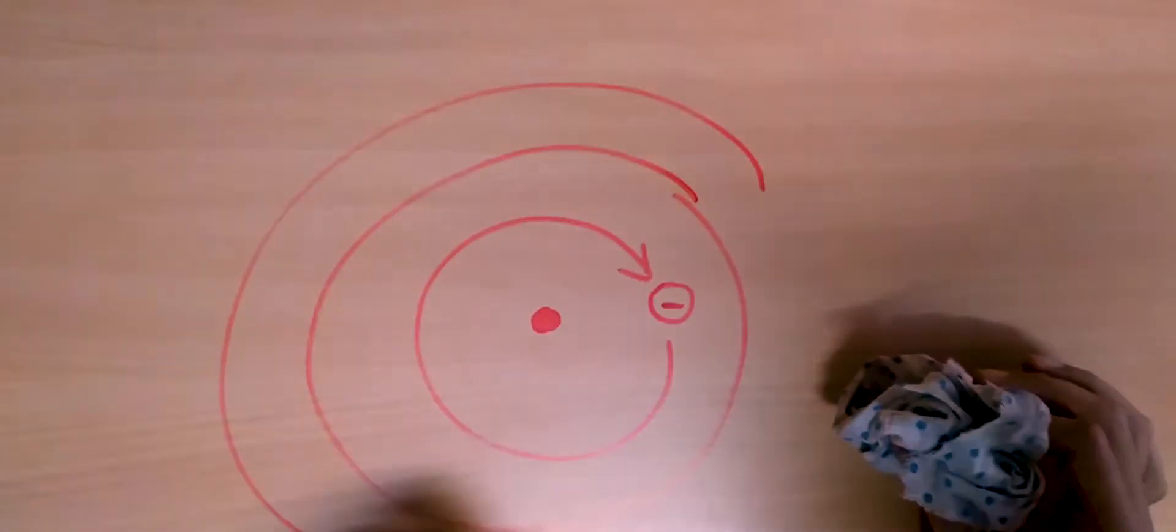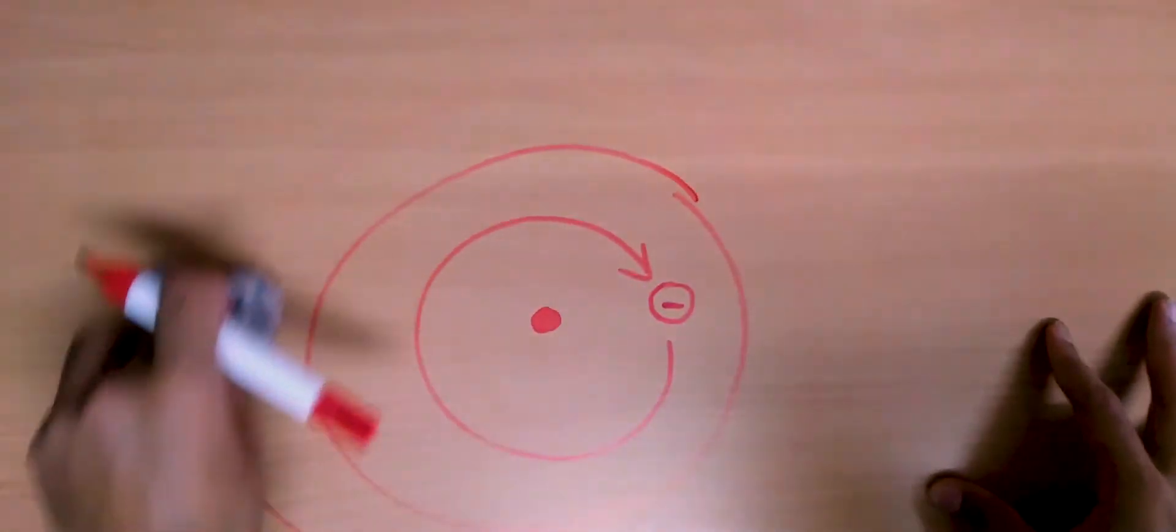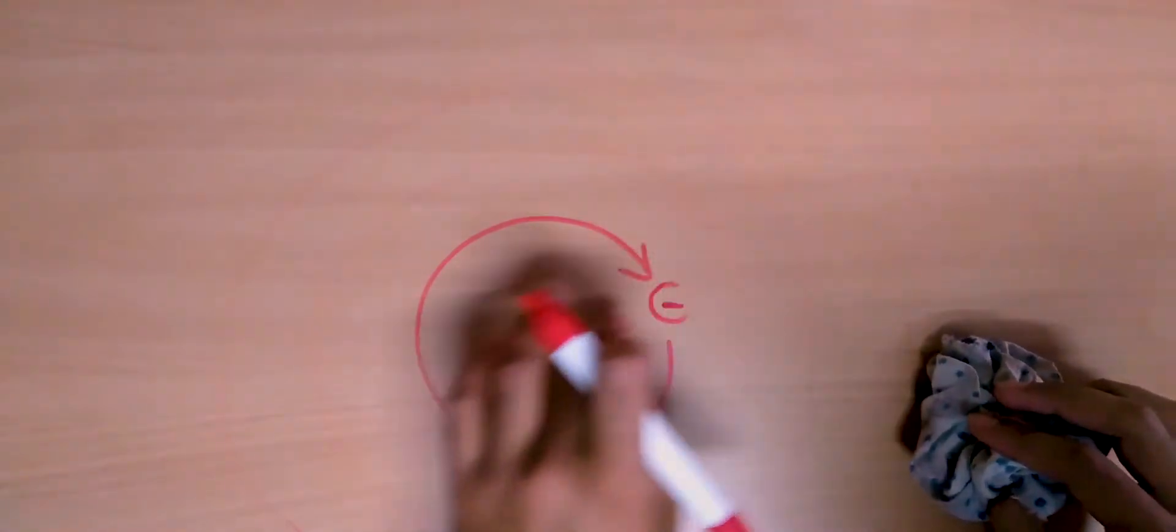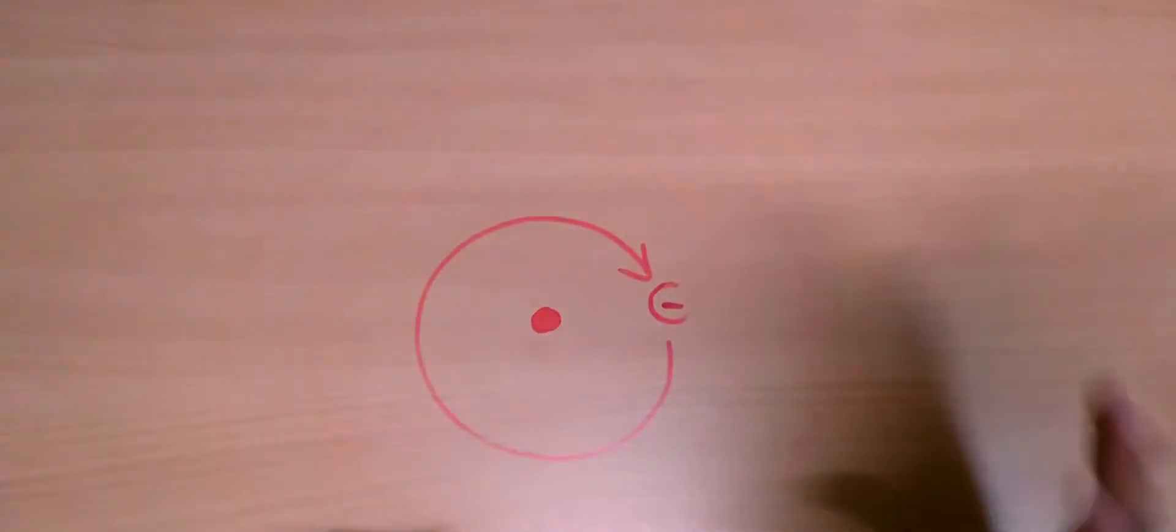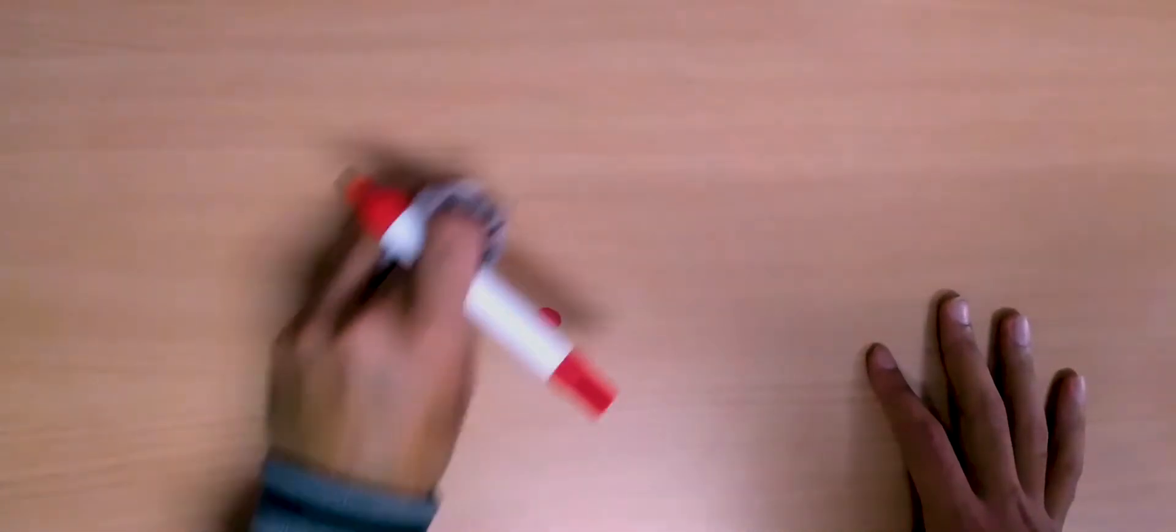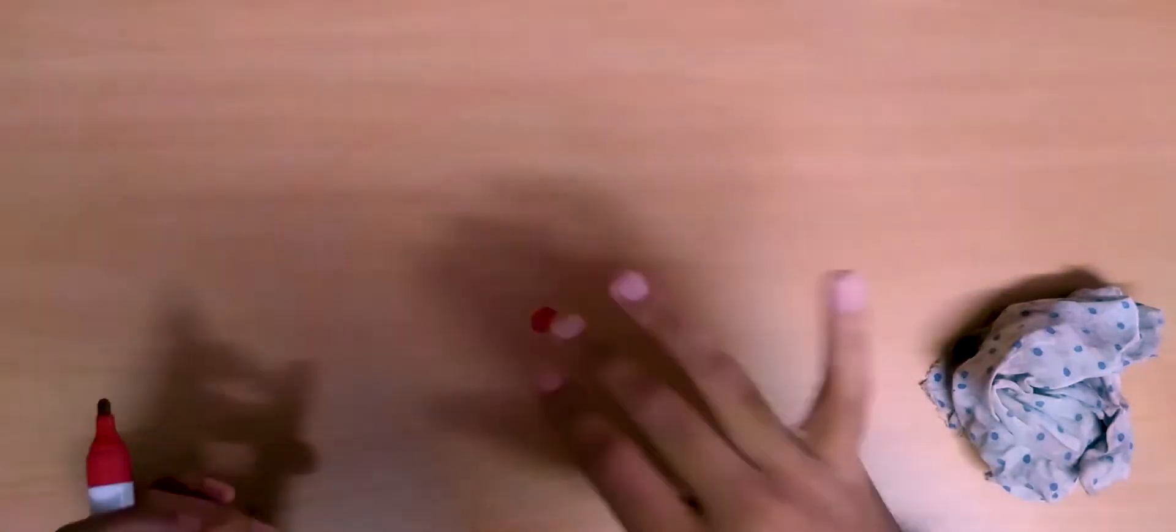We cannot put the electron in any orbit randomly. The orbits are very precise and only some orbits are stable. The electron cannot be present at any distance from the nucleus; it has to be at some precise distances or orbits in which it will remain stable. If the electron is in those particular orbits, it will not radiate any energy and will be very stable.